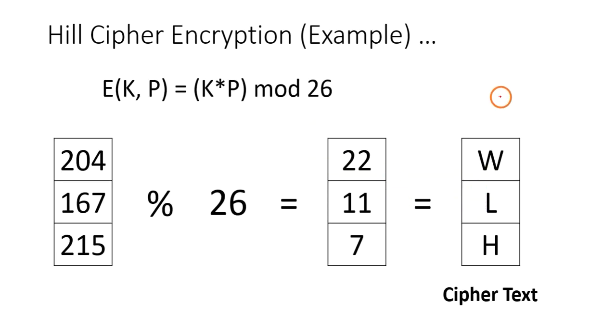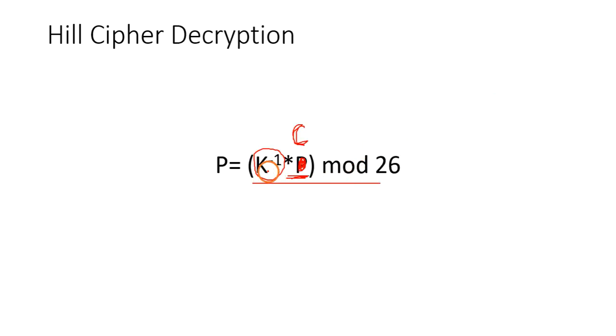You find the inverse of the matrix K, you multiply it with C, and you finally do mod 26. You will get the plaintext. This is the formula for decryption.